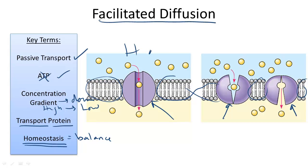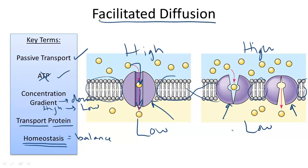On both sides of the picture there is a high solute concentration being shown, and the movement of these molecules is through the transport protein to the area where there is a low concentration of solute. One popular example of facilitated diffusion is the movement of glucose into cells.